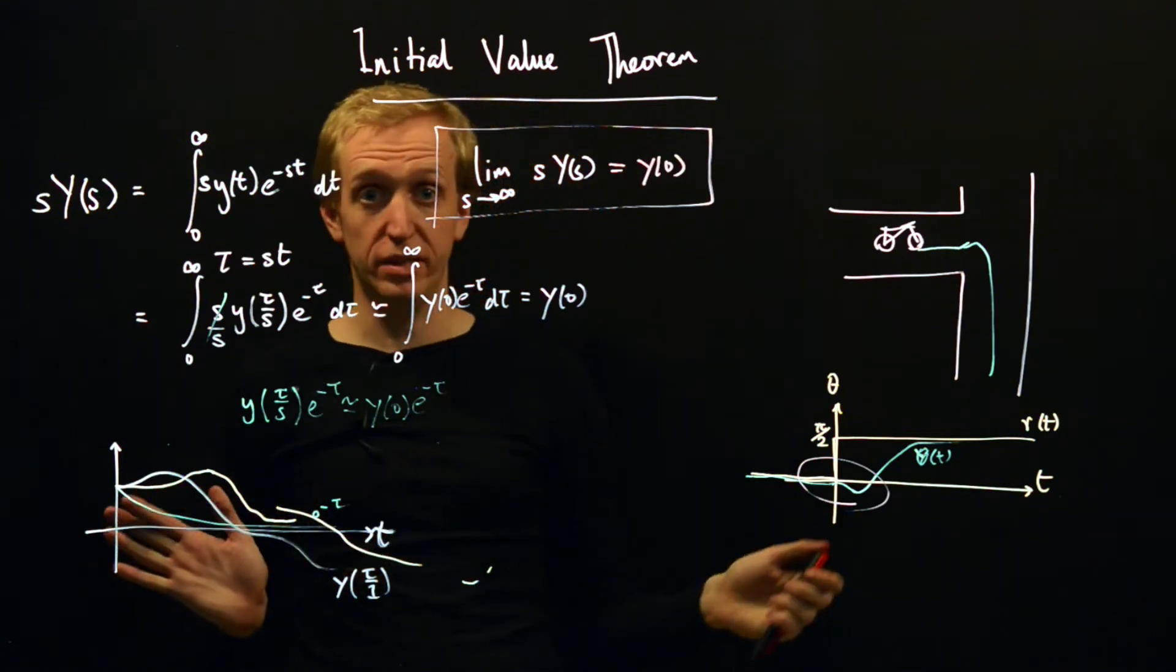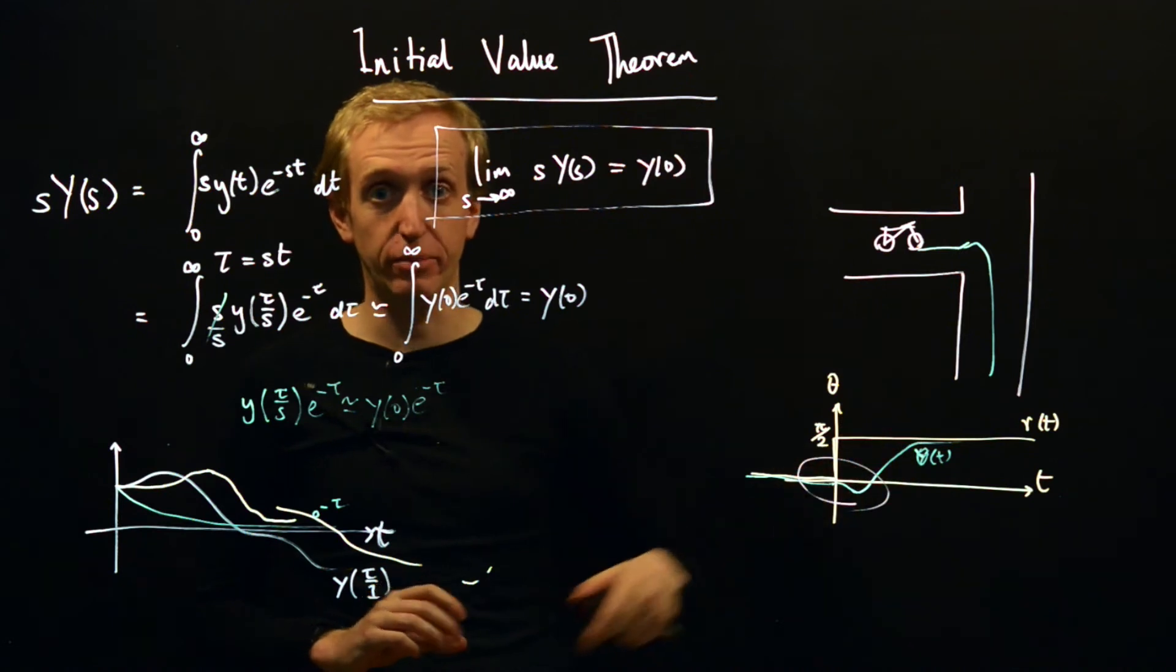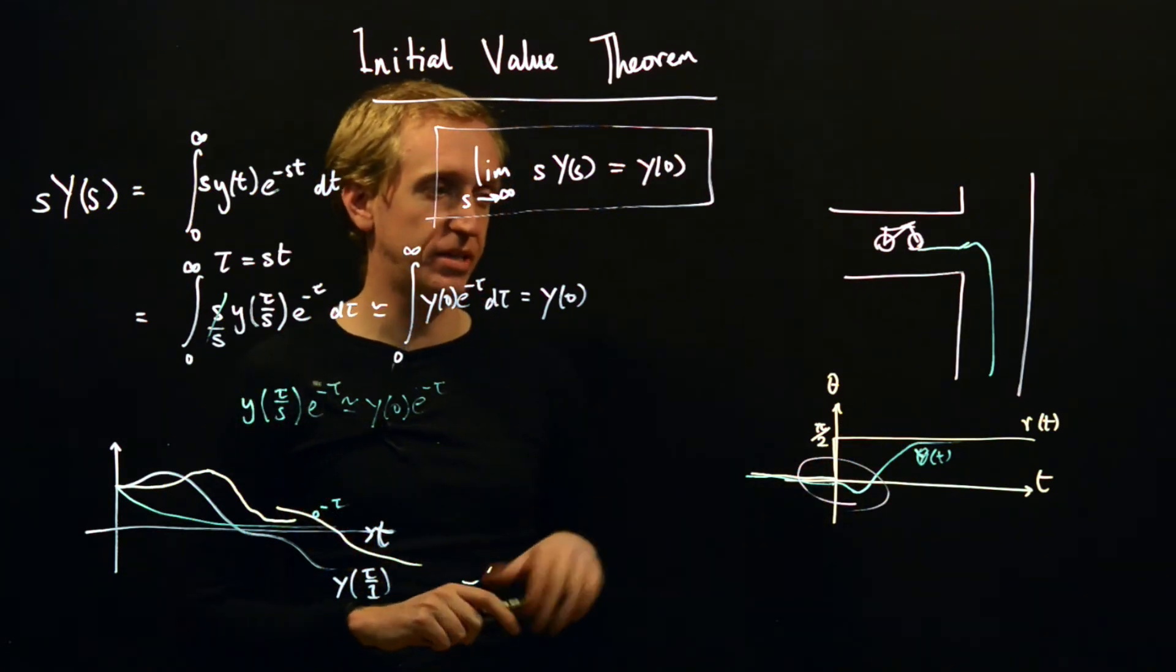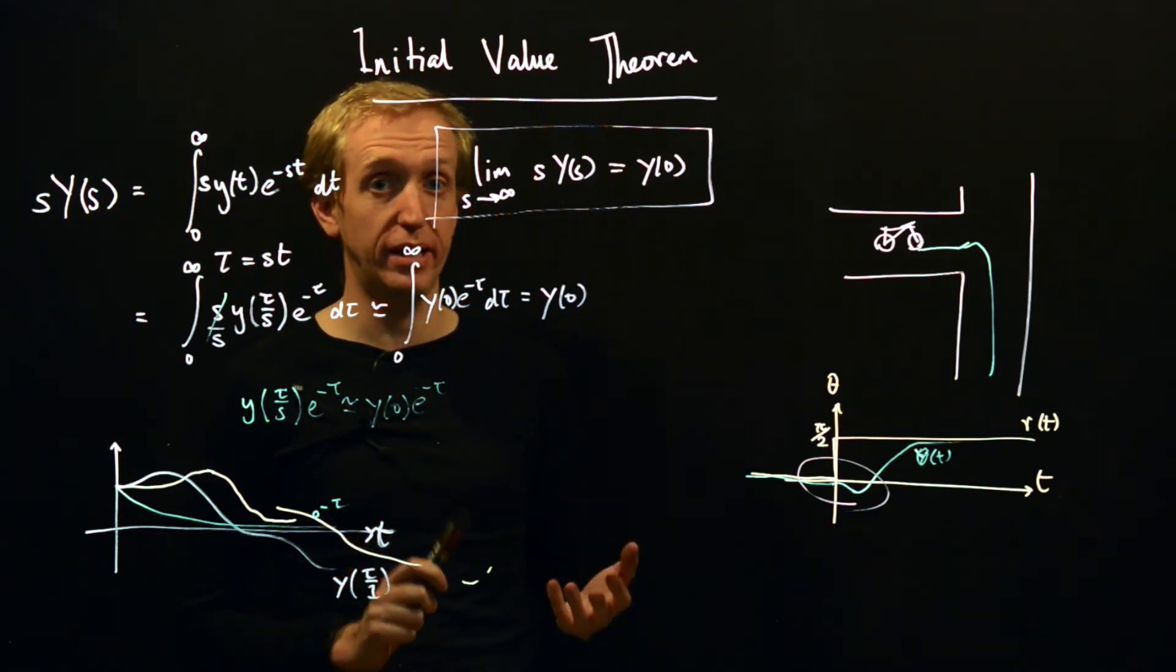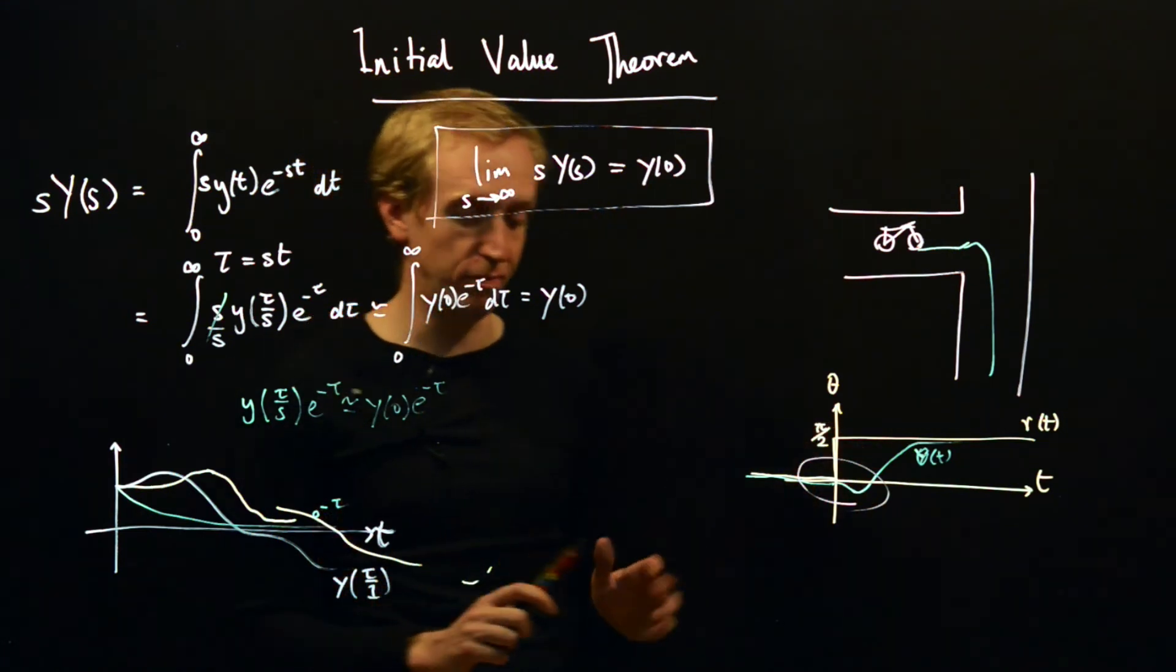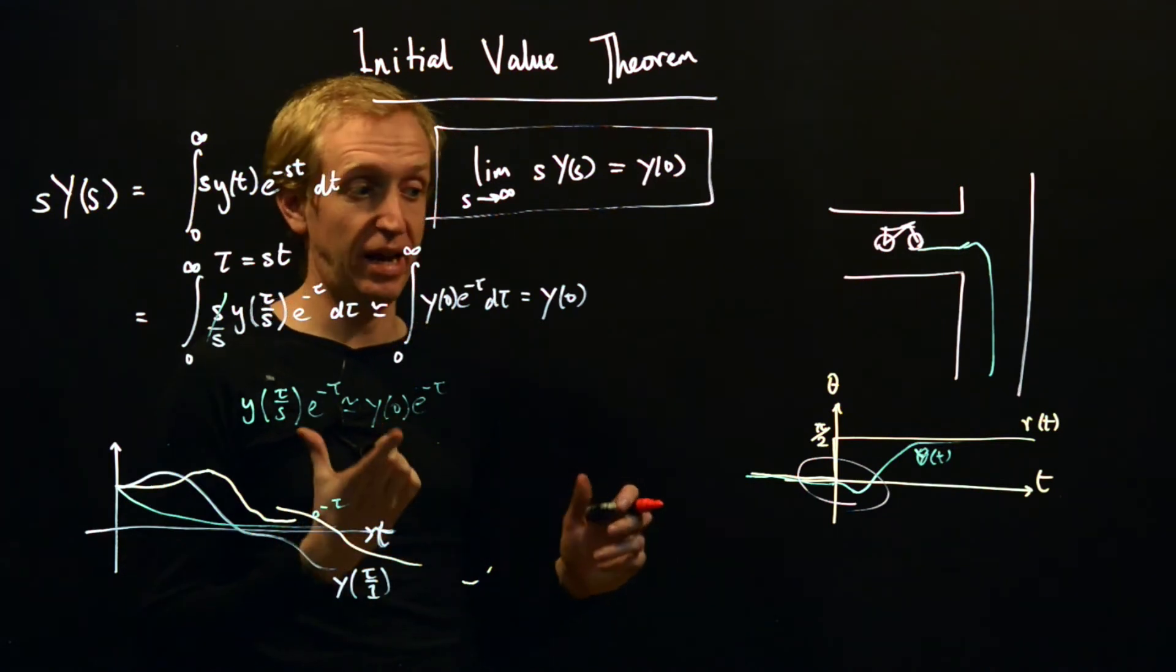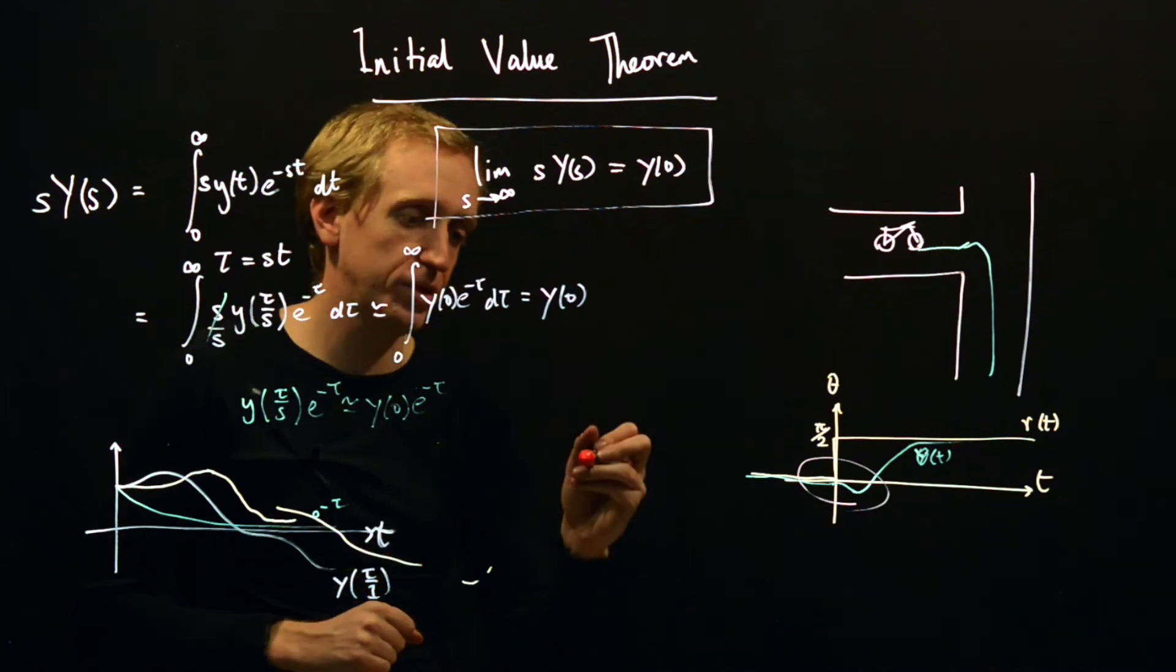So the question is, what on earth has this got to do with bicycles and counter steering behaviour? The bottom line is that it comes down to the fact that systems with right half plane zeros will always exhibit this behaviour of turning the wrong way. And the challenge that I want you to think about is how we could explain this with the final value theorem.